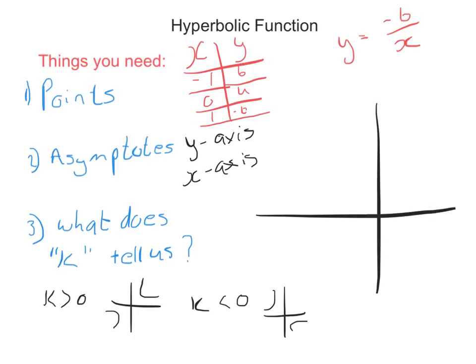So, if we have to sketch our function, we know that this is an asymptote, so it never touches. The x-axis is also an asymptote. k is negative, which means it needs to lie in this quadrant and it needs to lie in that quadrant. It's not too important of how you draw it. What's more important is that you label your points. So, if this is minus 1, this is going to be 6. And if this is positive 1, this is negative 6.